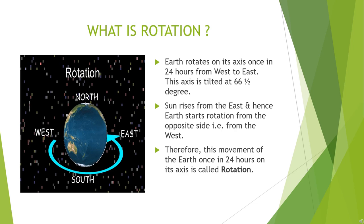As the sun rises from the east, the earth starts its rotation from the opposite side, that is from the west. Therefore, this movement of the earth once in 24 hours on its axis is called rotation.